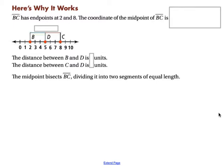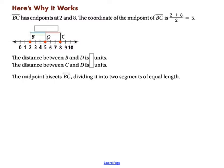Here's an example of why it works. Segment BC has endpoints at 2 and 8. You can see one endpoint at 2 and the other at 8. The coordinate of the midpoint of BC is the sum of those two divided by 2: 2 plus 8 is 10 divided by 2, which is 5. Point D is our midpoint — it's equal distance from C and B, 3 units away from each endpoint. So D is the midpoint of segment BC with coordinate 5.